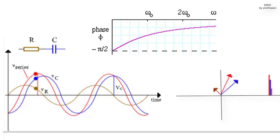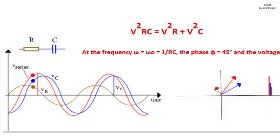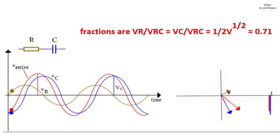The voltage is mainly across the capacitor at low frequencies and mainly across the resistor at high frequencies. Of course, the two voltages must add up to give the voltage of the source, but they add up as vectors. V squared RC equals V squared R plus V squared C. At the frequency Omega equals Omega O equals 1 slash RC, the phase Phi equals 45 degrees.